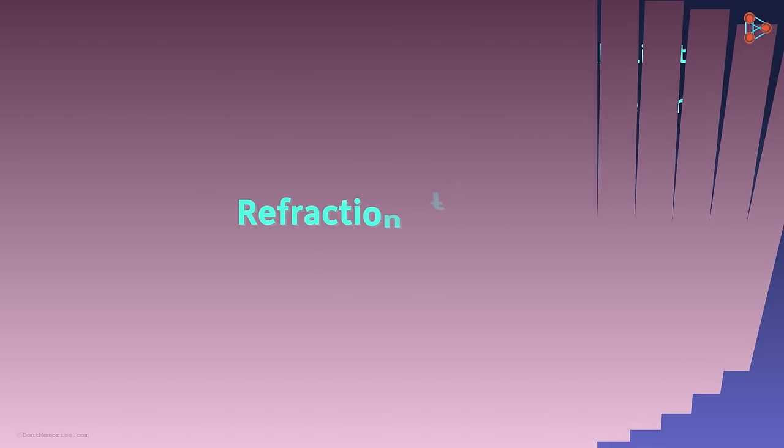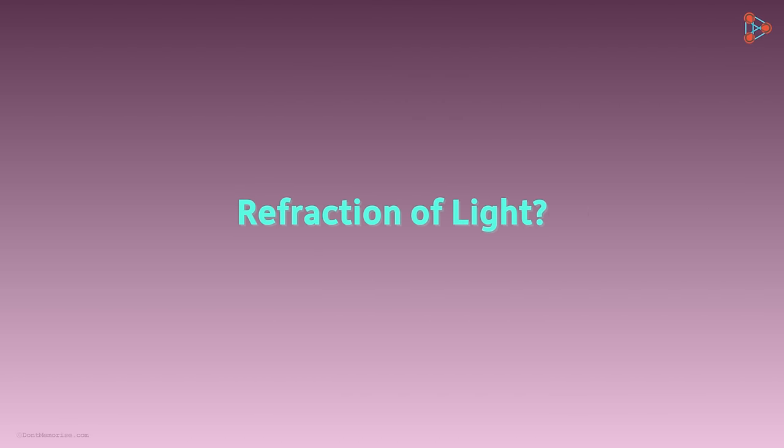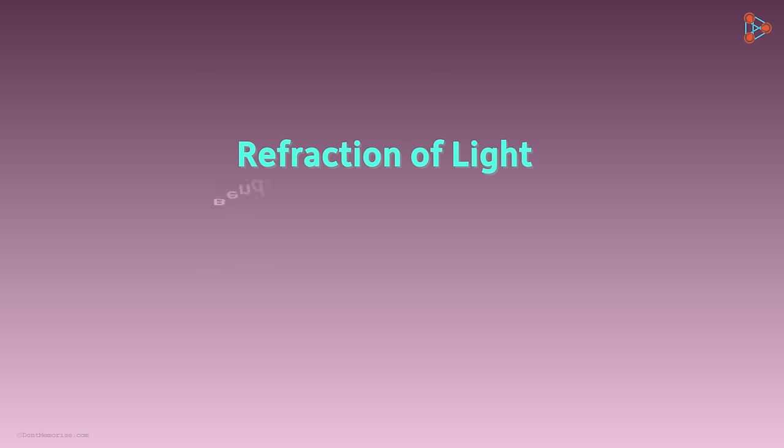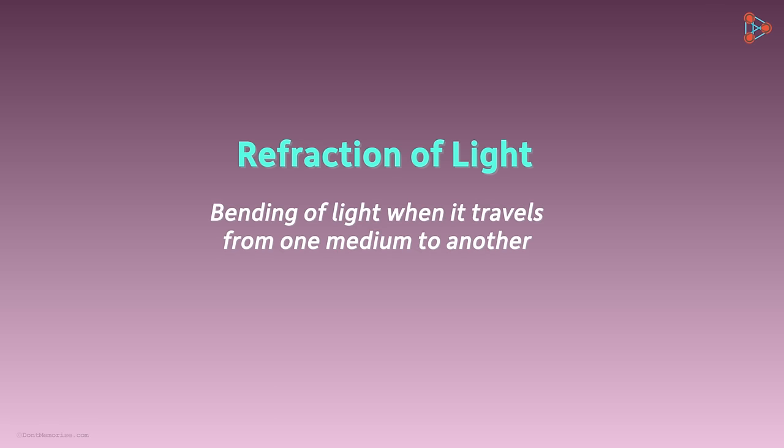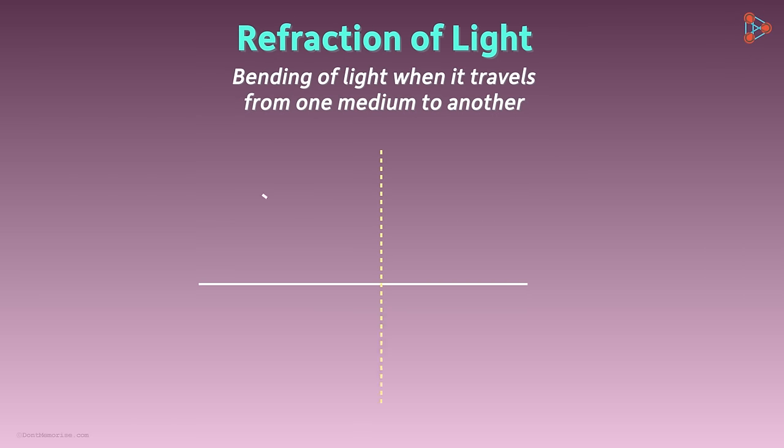So what is refraction of light? Here's how we define it in simple words. It's simply bending of light when it travels from one medium to another. Yes, if it is incident at this angle, then it goes through at another angle. Now this is not the exact definition as there are a few technicalities involved. Let me explain it to you.